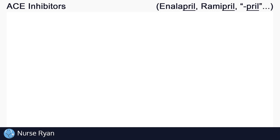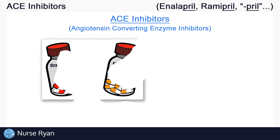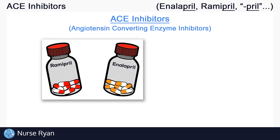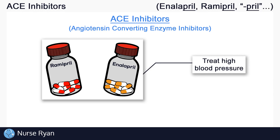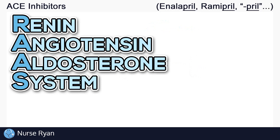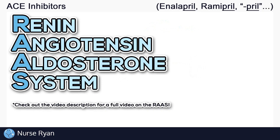Hi everyone, this is Nurse Ryan, and in this video we're going to very quickly and easily understand how ACE inhibitors like enalapril, ramipril — most of the '-pril' ending medications — work to treat high blood pressure. This is actually a lot easier if you understand how the renin-angiotensinogen-aldosterone system works.